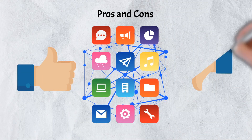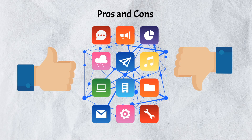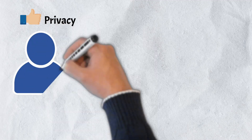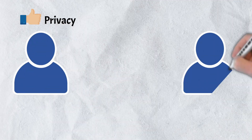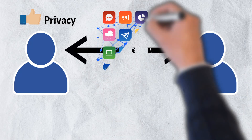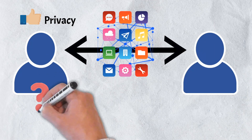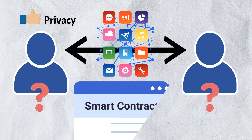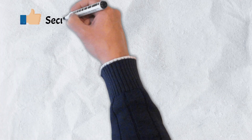When compared to centralized apps, dApps have both benefits and drawbacks. Beginning with the benefits: number one is privacy. One of the most significant advantages of decentralized applications is their capacity to protect user privacy. Users are not required to give out personal information in order to enjoy its features — instead, smart contracts are used to conduct transactions between two anonymous parties. Security is another benefit.